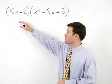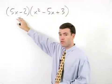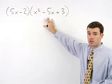To multiply a binomial times a trinomial, we simply distribute each of the terms in the binomial through all three terms in the trinomial.